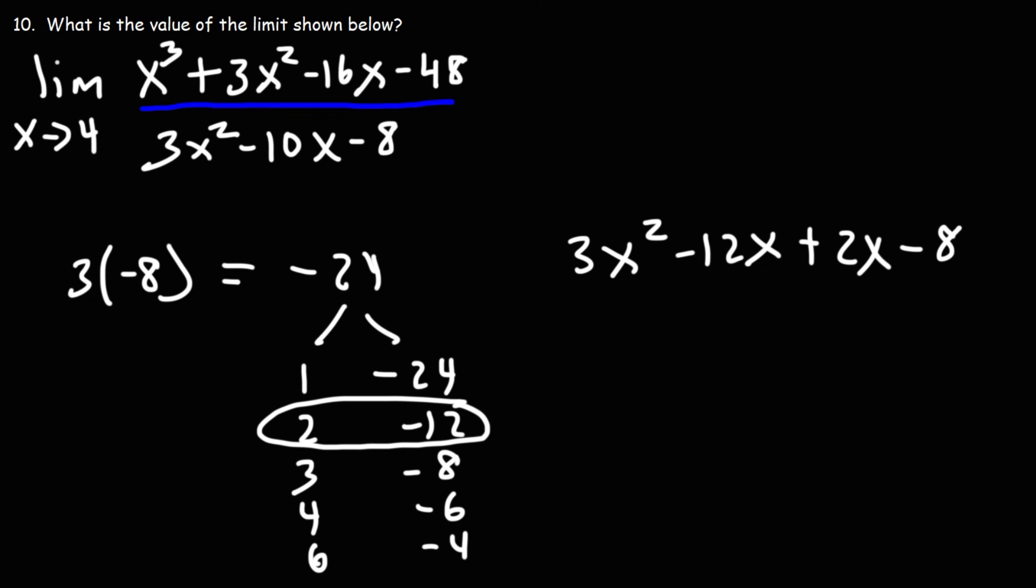So now we're going to factor by grouping. Notice that the ratio 3 and negative 12 is the same as 2 and negative 8. Negative 8 divided by 2 is negative 4. Negative 12 divided by 3 is negative 4. When the first two terms have the same ratio as the last two terms, you could factor by grouping.